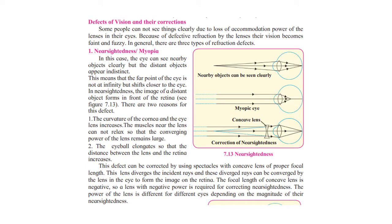Continuing with Science 1, Chapter 7 on Lenses. In the previous lectures we learnt about ray diagrams, sign conventions, the lens formula, and magnification. Now we will be learning about defects of vision and their corrections.